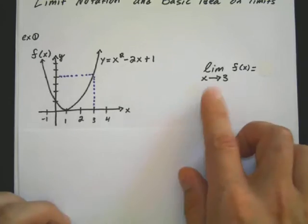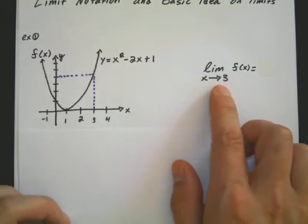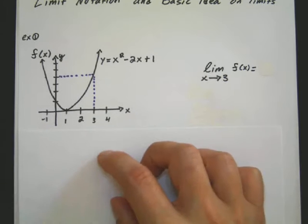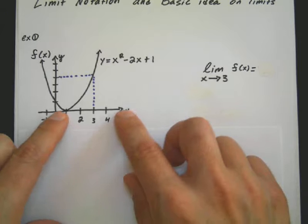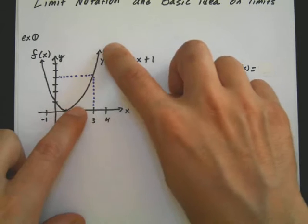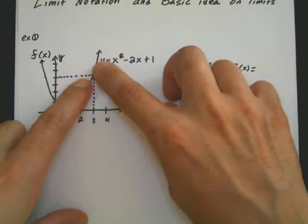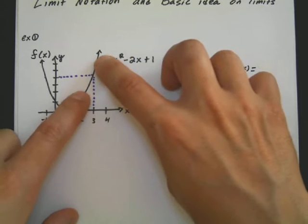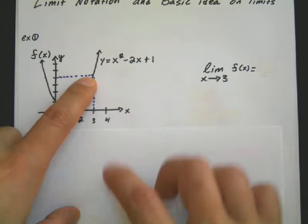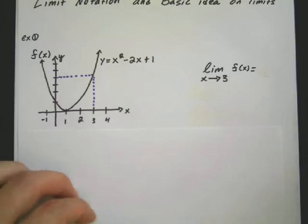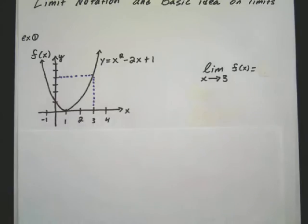And here's a limit as x approaching 3 of f of x. Now the idea behind it is not difficult at all. All this is saying is that if you approach 3 from the x values, what y values is the graph approaching? Meaning, as I go towards 3, what's the height of the value? You can kind of see that I dotted it across. It's going to equal 4. So your limit is equal to 4.